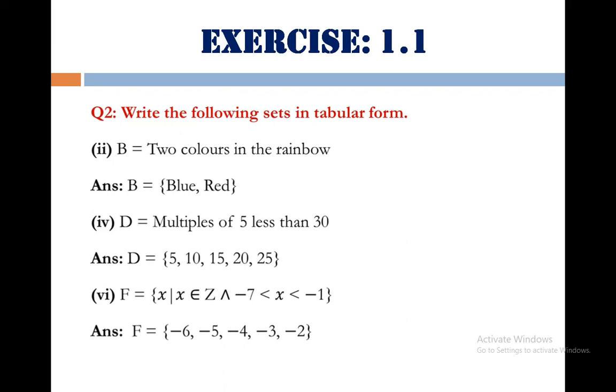Part number 6, in this question number 2 is F equals set of elements X such that X belong to Z and minus 7 less than X less than minus 1. Its answer is F equals minus 6, minus 5, minus 4, minus 3, minus 2. Same I will say that you can draw a number line and it will be easy for you to complete your answer. That makes our solution number 2 complete.